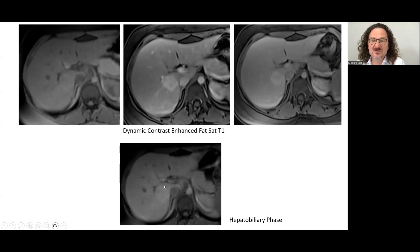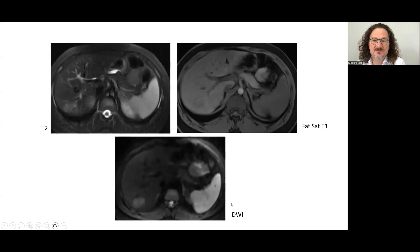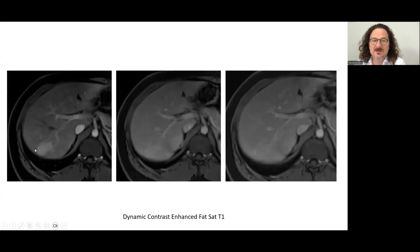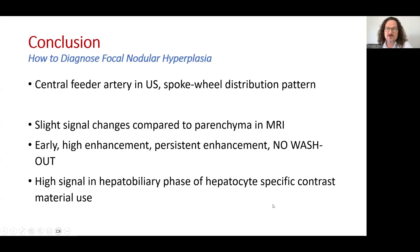In the late hepatobiliary phase image, the lesion enhances more than the background parenchyma. This was a difficult case: a slightly hyperechoic lesion, very difficult to recognize on T1, with very mild diffusion restriction. Early arterial enhancement is visible, becoming isointense with the background parenchyma, but with no washout.